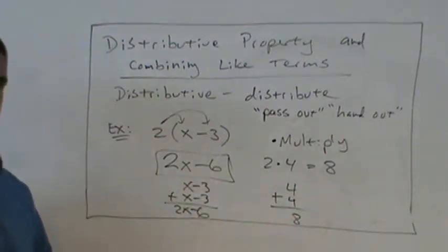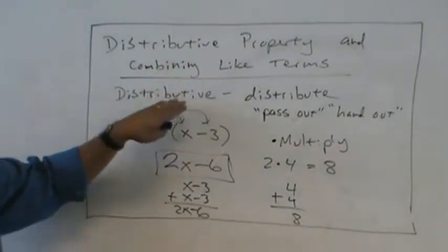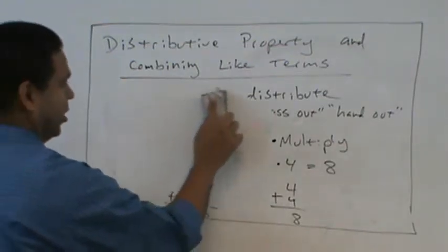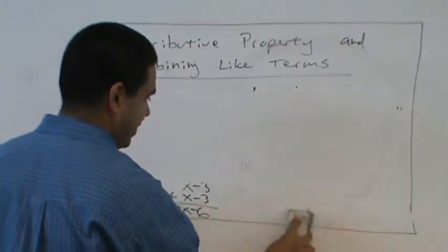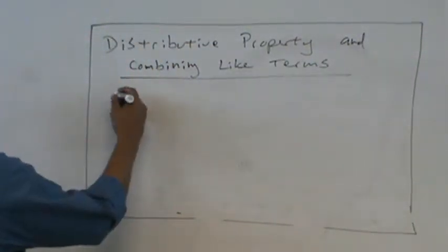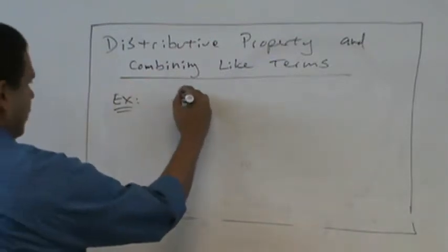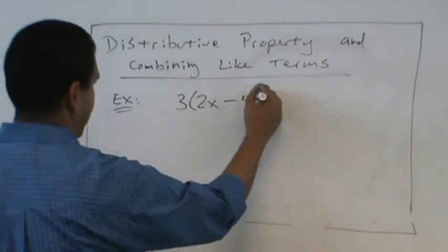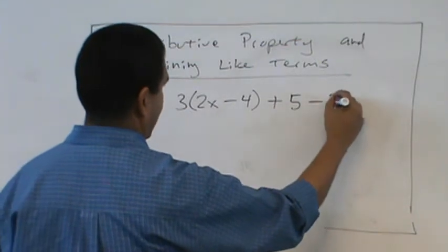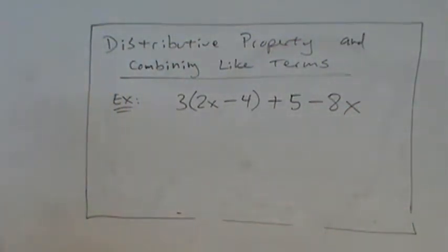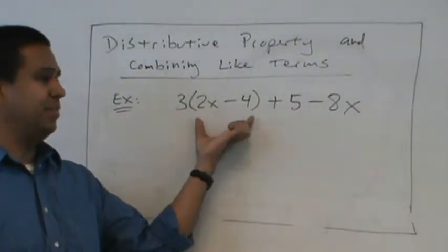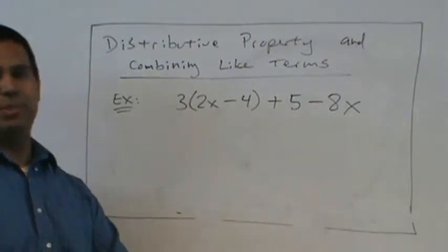Alright. So let's do another example. Because that was just distributing, let's try to distribute with combining. Let's try it out. Whoa, that looks crazy. Yeah, we took it to high school now, huh? Three times this plus five minus eight X. Wow. What should we do first?